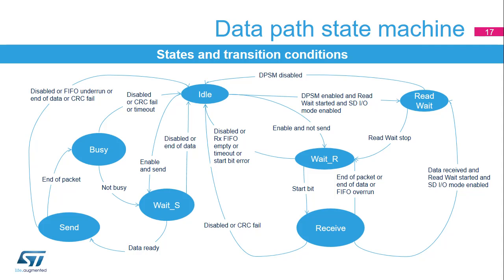For data reception, the DPSM moves from idle to wait R state. When a start bit is detected on the bus, the DPSM moves to receive state where it remains until a full packet is received. As long as the end of data transfer flag and errors are not detected, the DPSM will keep switching between wait R and receive states. If an error or the end of data transfer flag is detected, the DPSM will return to idle state.